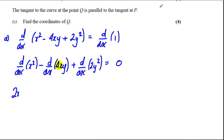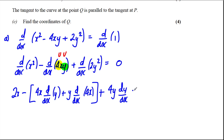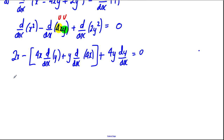This differential we're going to do by the product rule, where u is 4x and v is y. So we get u·v', which is 4x · d/dx of y, plus v·u', which is y · d/dx of 4x. Then differentiating 2y² implicitly gives 4y · dy/dx.